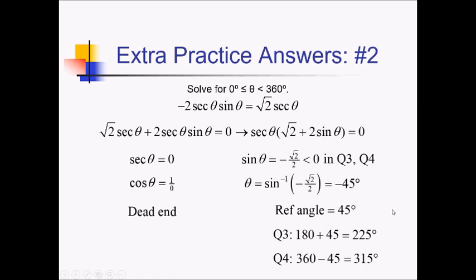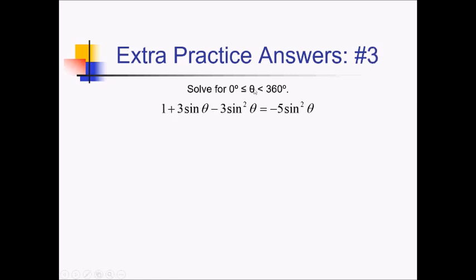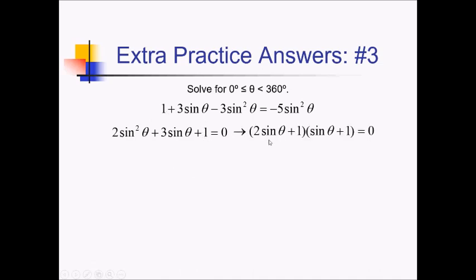On this problem, we're trying to figure out the value of theta between 0 and 360. We've got sines and sine squareds all over the place. But since I have a sine and a sine squared, I think we could treat this like a quadratic. Getting everything on one side — adding the 5 sine squared over to the left side — we rewrite the left side as 2 sine squared of theta plus 3 sine of theta plus 1, all equals 0. Now we factor this. We need 2 sine and sine of theta to give us 2 sine squared. The only way to get positive 1 is with positive 1 and positive 1, so this can only be (2 sine of theta + 1)(sine of theta + 1).